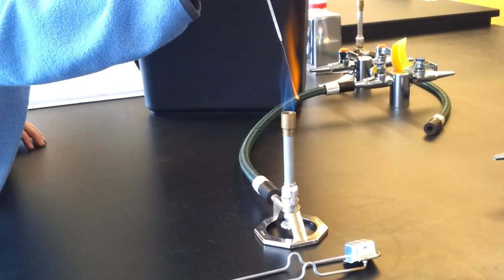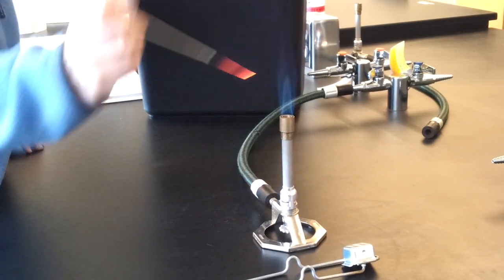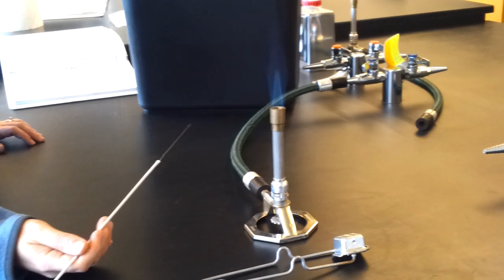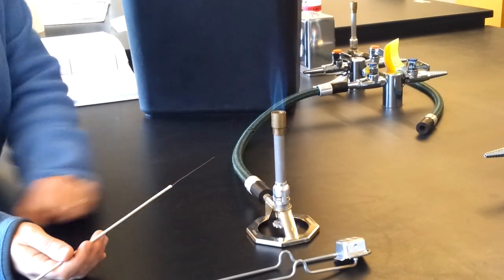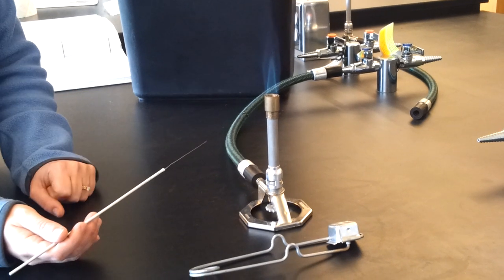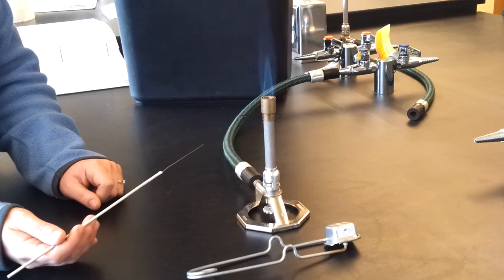So somewhere right about here is where you want to hold your loop. If you continue to have troubles getting the whole thing orange, it could mean that your loop is bent, and you can either try to bend it back until it's straight or just get a different loop. If it's curved, you will have more trouble sterilizing it.